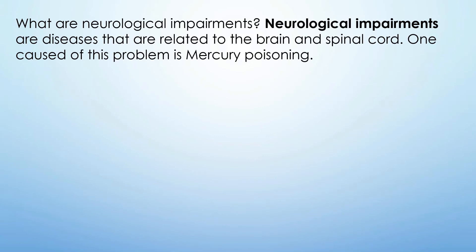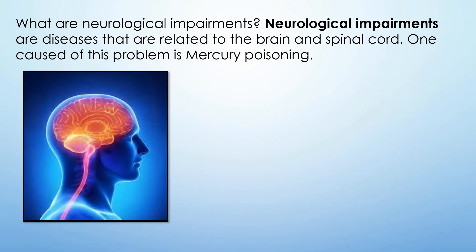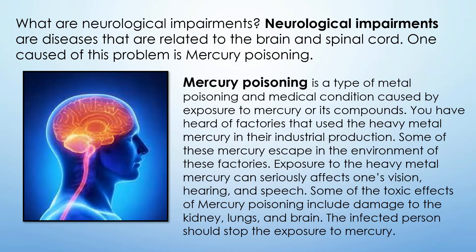Neurological impairments are diseases related to the brain and spinal cord. One cause is mercury poisoning — a type of metal poisoning caused by exposure to mercury or its compounds. Factories that use mercury in industrial production may release it into the environment. Exposure to mercury can seriously affect one's vision, hearing, and speech, and can damage the kidneys, lungs, and brain. The affected person should stop exposure to mercury.